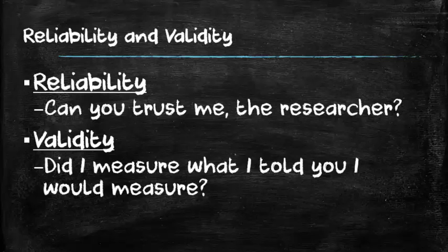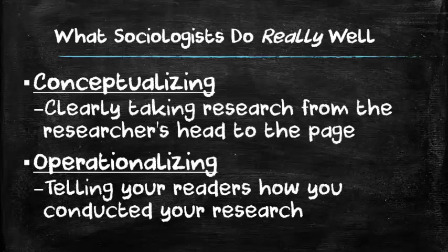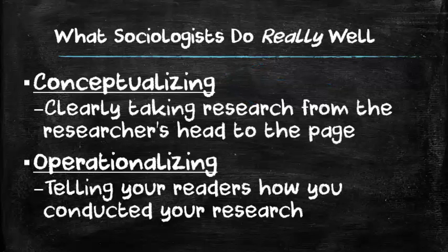In my opinion, because I'm a sociologist, there are a couple of things that sociologists do really well — though other academics do these things well also. Sociologists spend a lot of time conceptualizing their research and then operationalizing their research. Conceptualizing means that as you start to think about research you might want to do, you really take your time to think about what you want to research, how you want to research it, and as you've spent time planning, you take that information and put it on the page so that the reader has a clear picture of exactly what you're trying to do. It's kind of like setting the stage.